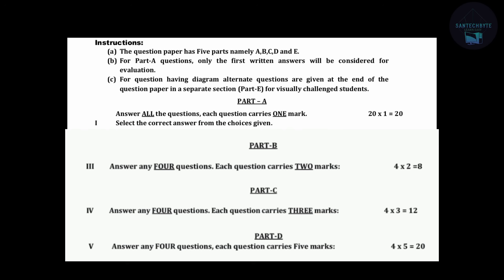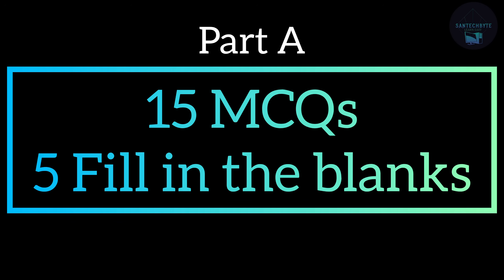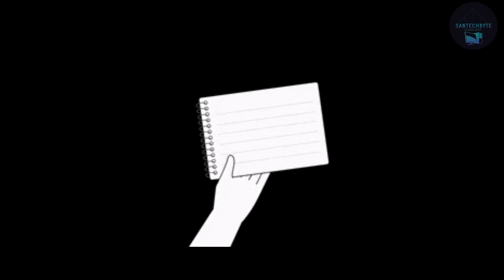The 70-mark theory paper is divided into Part A, Part B, Part C, Part D, and Part E. Part A is for 1 mark each — you will have 20 questions, out of which you have 15 MCQs and 5 fill-in-the-blanks.